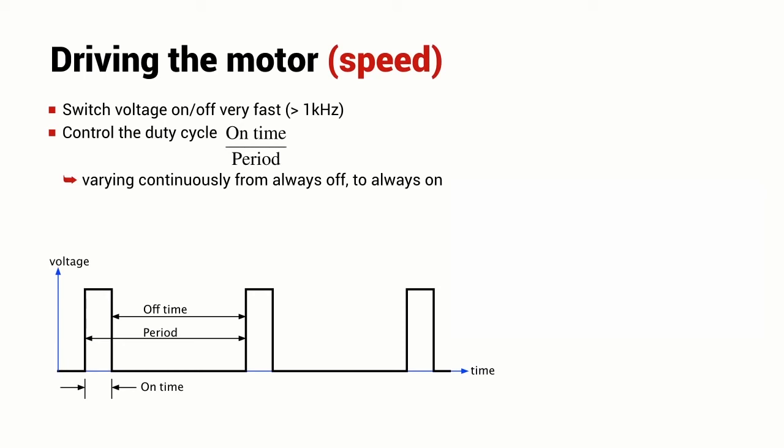The electronics which is driving the H-bridge circuit is able to control the duty cycle. That's the ratio of the on time to the period and this can vary from the voltage being always off to the voltage being always on.